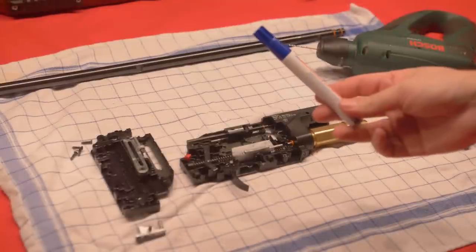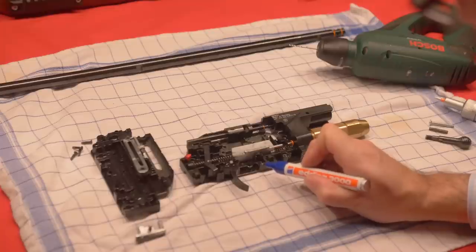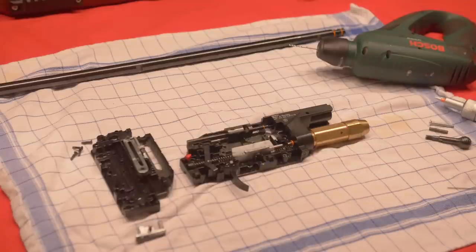Now, with the waterproof marker, mark the exact spot where you're going to have to drill your hole. Now, the distance to the left and to the right of the hole should basically be the same.